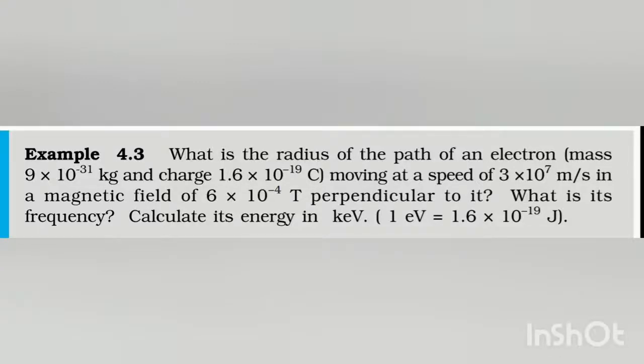Students, in this video let us solve Example 4.3. I am reading the question. What is the radius of the path of an electron with mass 9×10⁻³¹ kg and charge 1.6×10⁻¹⁹ coulombs moving at a speed of 3×10⁷ meters per second in a magnetic field of 6×10⁻⁴ tesla perpendicular to it?